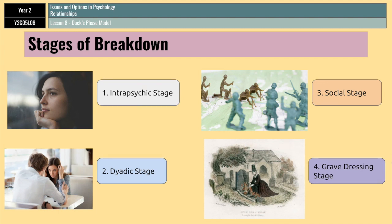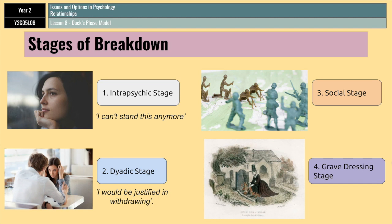Each of the stages has a specific threshold that people cross. In the intra-psychic stage, the threshold is the idea of 'I can't stand it anymore.' In the dyadic stage, they reach the point of thinking 'I would be justified in removing myself from this relationship — I have a justifiable grievance that I need to get out into the open.' When they reach the social stage, it's more of a 'I mean it, I'm done now' threshold. And in the grave dressing stage, the threshold is 'it's time to start a new life — I'm putting what happened behind me and I'm ready to move forwards.'